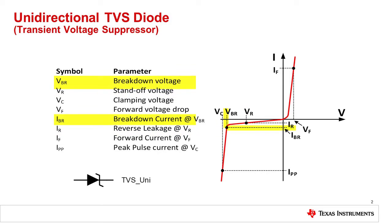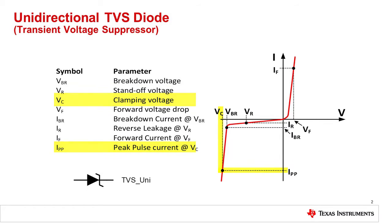The reverse breakdown voltage VBR is the point at which the TVS diode starts to break down and limit, or clamp, the voltage. Finally, the clamping voltage VC is the voltage across the TVS diode when the peak pulse current IPP is flowing.